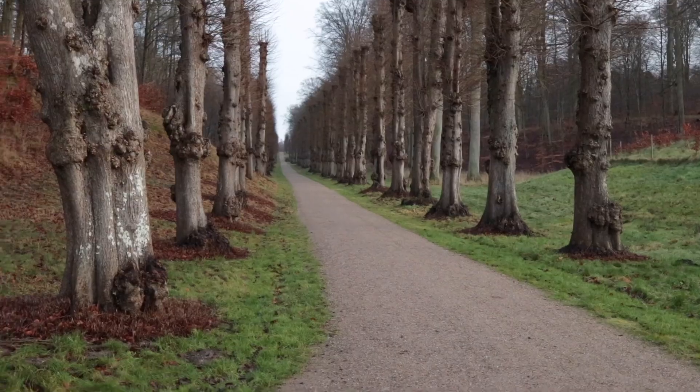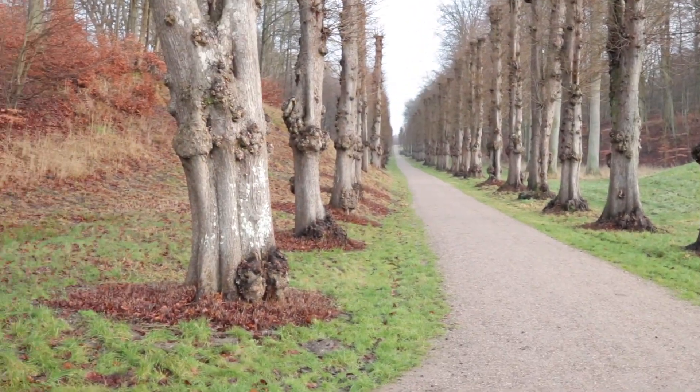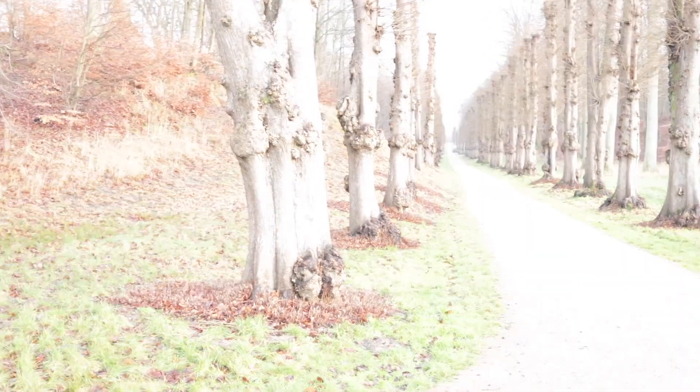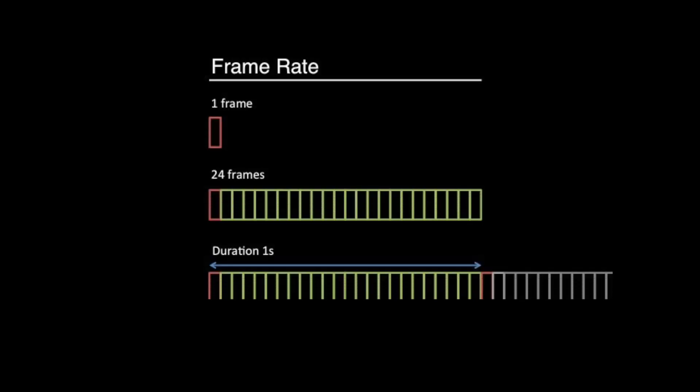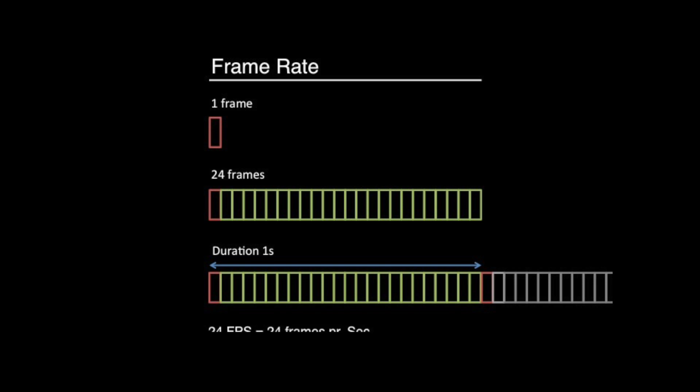Many mistakenly think that shutter speed changes with the frame rate — this is simply not true. Frame rate is simply the amount of frames captured per second. For 24 FPS, this means 24 frames evenly distributed over one second.